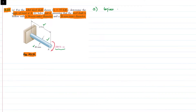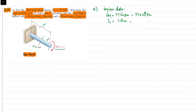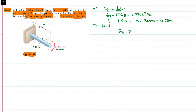For part A, the given data is: G = 77 GPa, which is 77 × 10⁹ Pa; length L = 1.8 m; and diameter of the solid shaft = 30 mm, which equals 0.03 m. We need to find the angle of twist theta at point A.